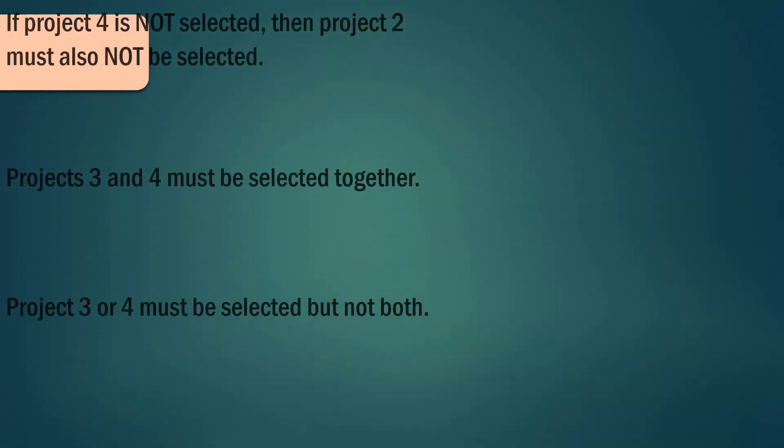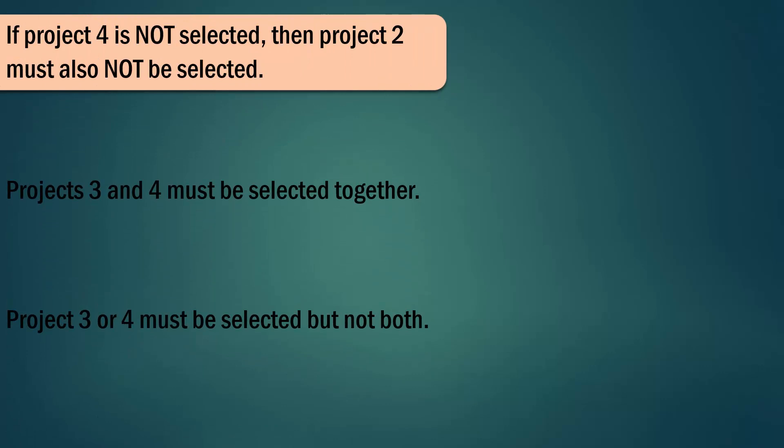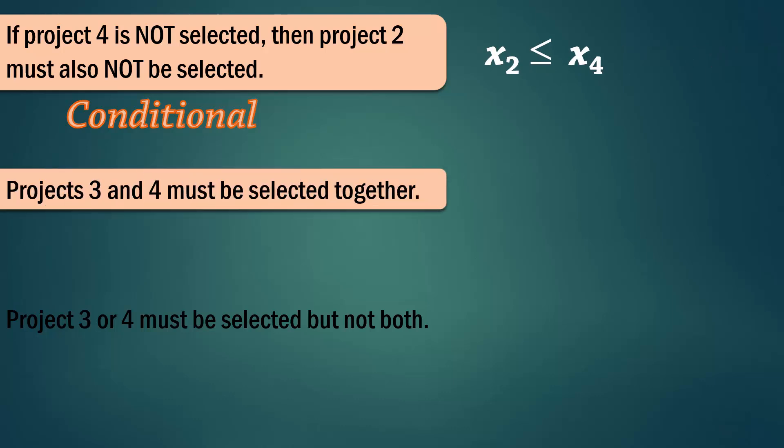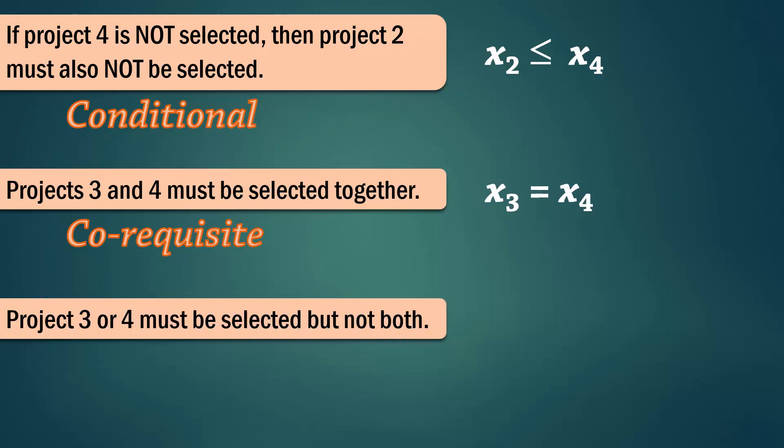Let's look at even more. If project 4 is not selected, then project 2 must also not be selected. This is another conditional case where 2 depends on 4. So we write x2 less than or equal to x4. Projects 3 and 4 must be selected together. This again is the corequisite case where 3 and 4 must be in or out together. So x3 equals x4. Projects 3 or 4 must be selected, but not both. In other words, we must select exactly 1 of 3 and 4. Hence this is a multiple choice case, and so x3 plus x4 equals 1.